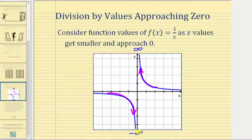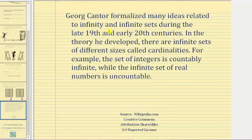Now let's talk about some history. Georg Cantor formalized many ideas related to infinity and infinite sets during the late 19th and early 20th centuries. In the theory he developed, there are infinite sets of different sizes called cardinalities. For example, the set of integers is countably infinite, while the infinite set of real numbers is uncountable. As we can see, after grasping the idea of infinity, there are additional topics involving infinity to be considered.